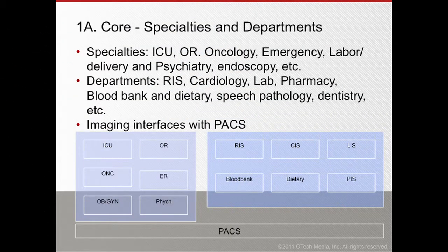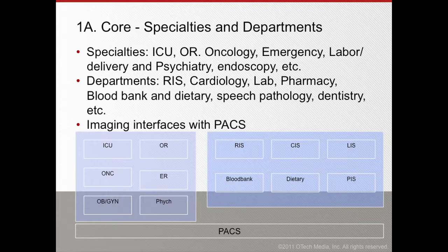Taking a top-down approach, let's look more closely at the core component — the heart of the DHE system. The core has two dimensions: specialties and departments. Specialties include the intensive care unit, OR, radiation therapy oncology, the emergency department, labor and delivery, psychiatry, and endoscopy, each focused on one specific clinical condition. Departments — such as radiology, cardiology, laboratory, pharmacy, blood bank, dietary, housekeeping, speech pathology, and dentistry — serve those specialties.